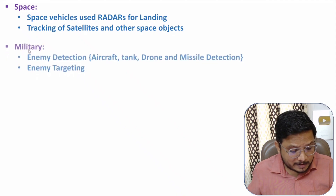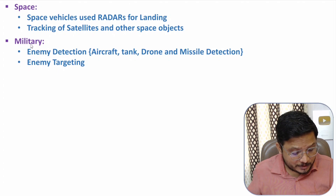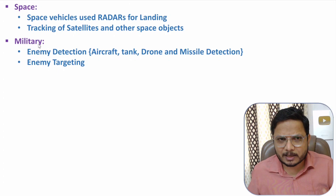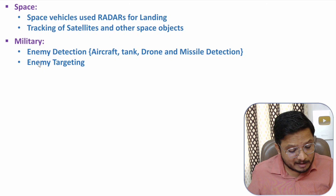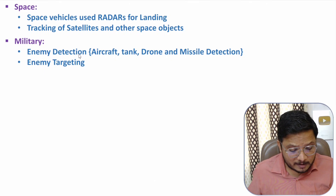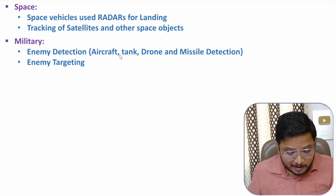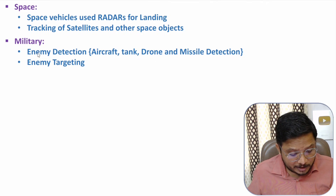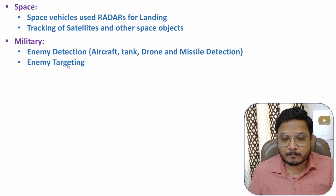The next application is military. In military there are many applications like enemy detection and enemy targeting. Enemies can include aircraft, tanks, drones, as well as missiles. For detection of these objects we use radar in military applications, and for targeting enemies we also use radar systems.